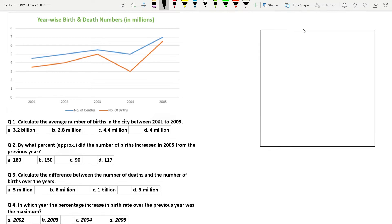The line chart given represents yearwise birth and death numbers in millions. I have already drawn a table here. I will make two columns birth and death and will mark the year besides the table. 2001, 2002, 2003, 2004 and 2005.